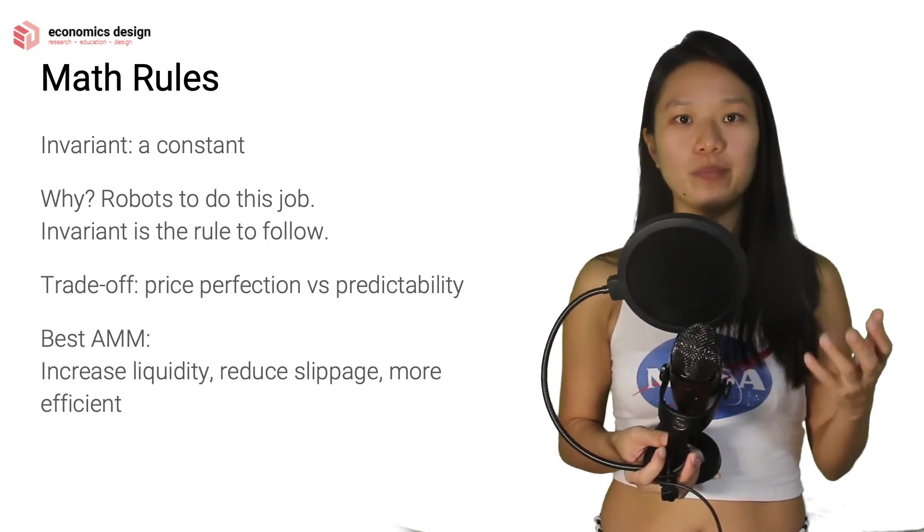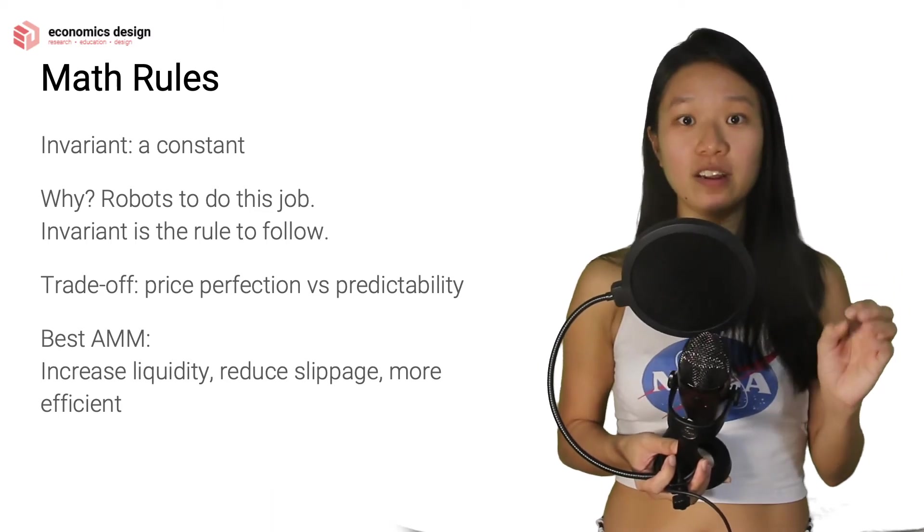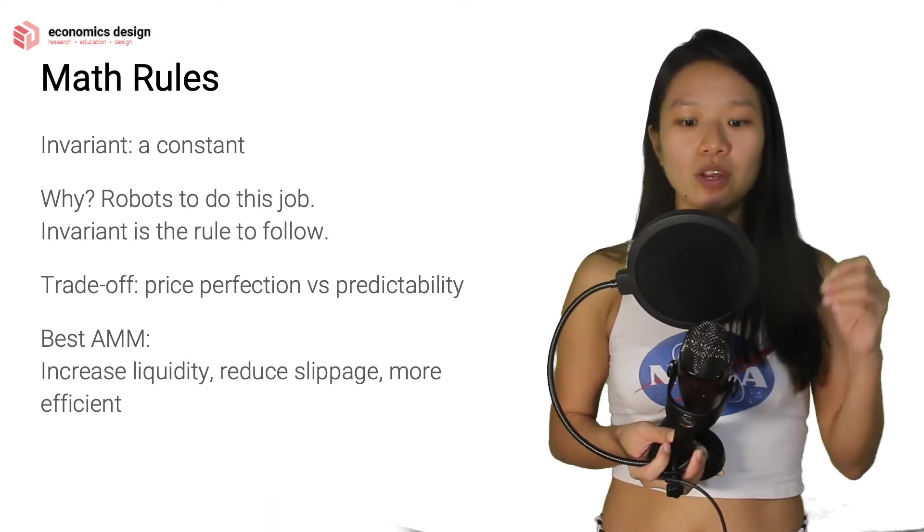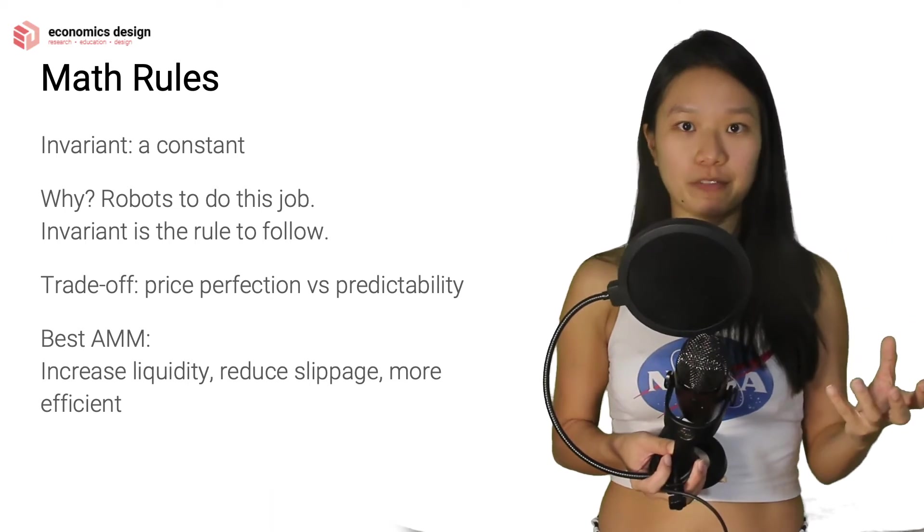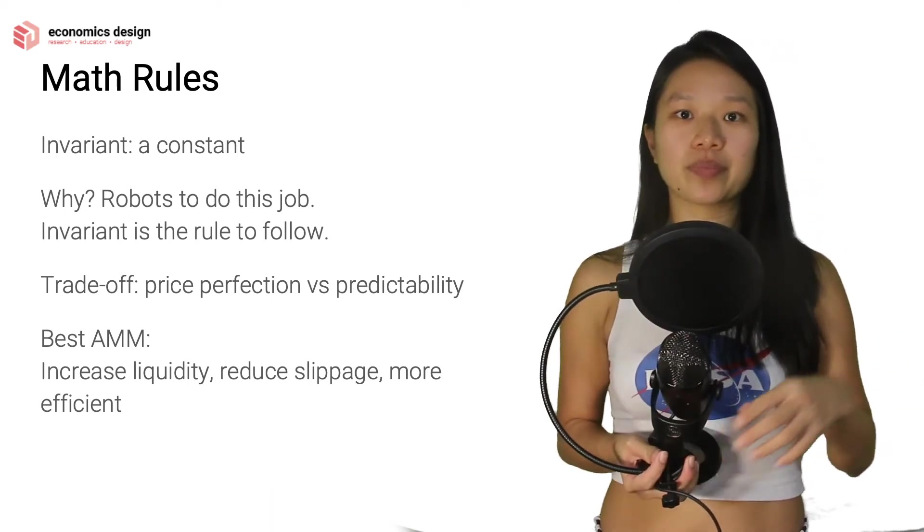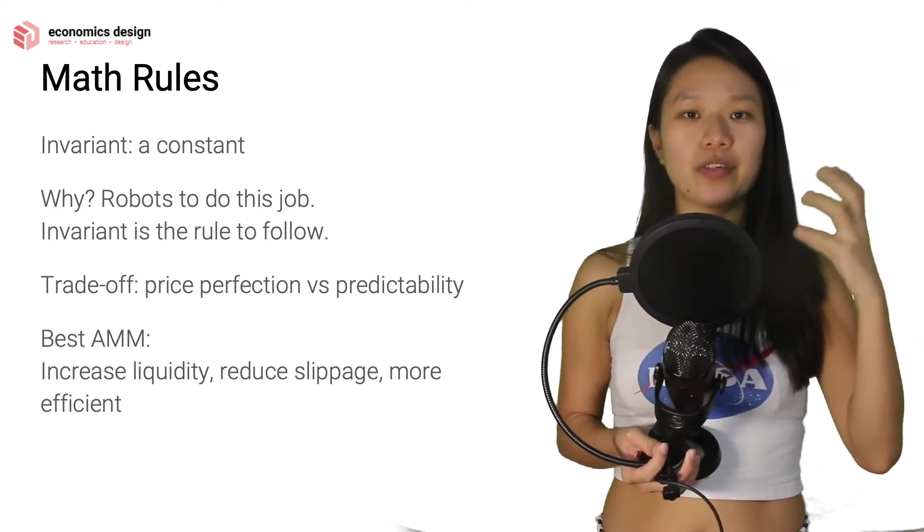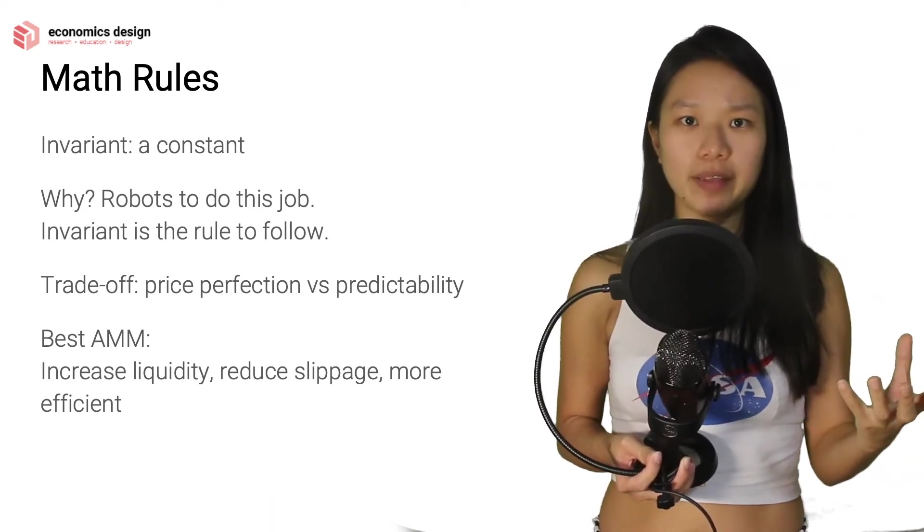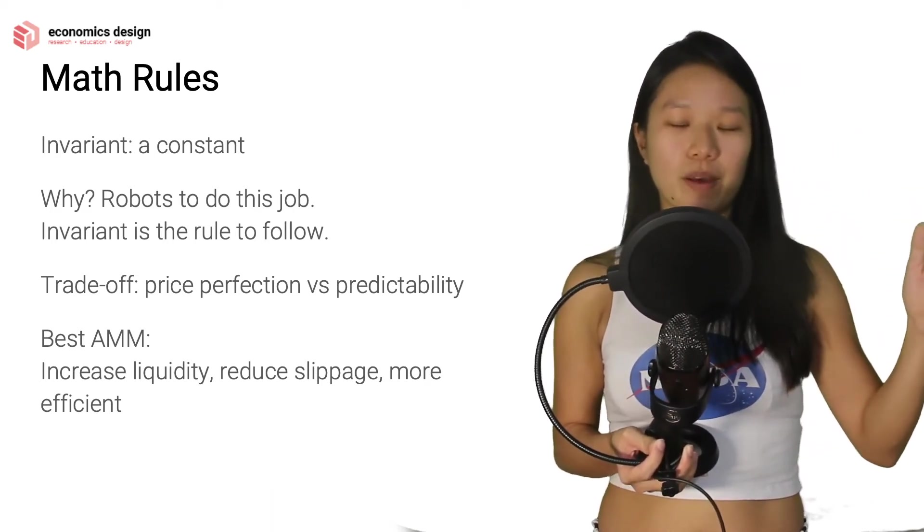We're talking about the trade-off between price perfection versus predictability. With this mechanism, we don't really have price perfection because later you're going to see that there will be stuff like price slippage and a lot of other things that it's not a very efficient market, but that's where perfection comes in.